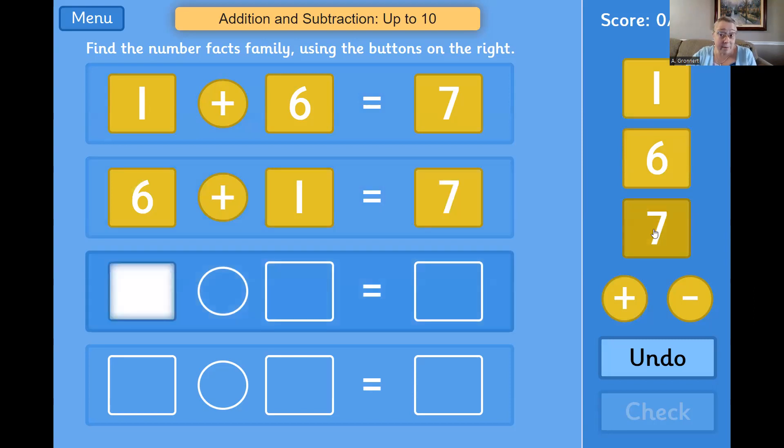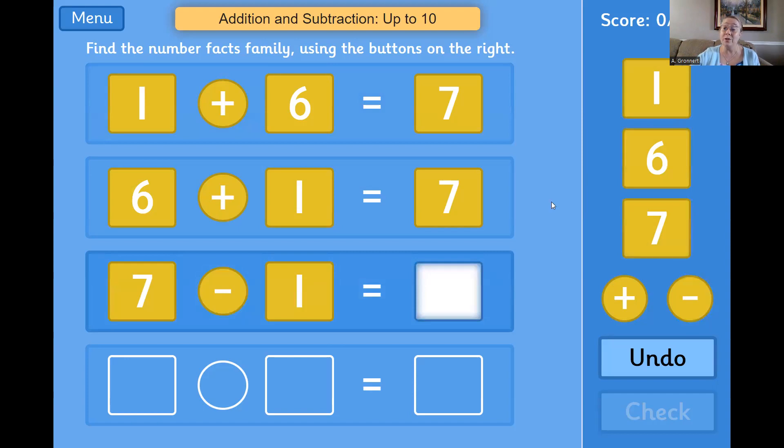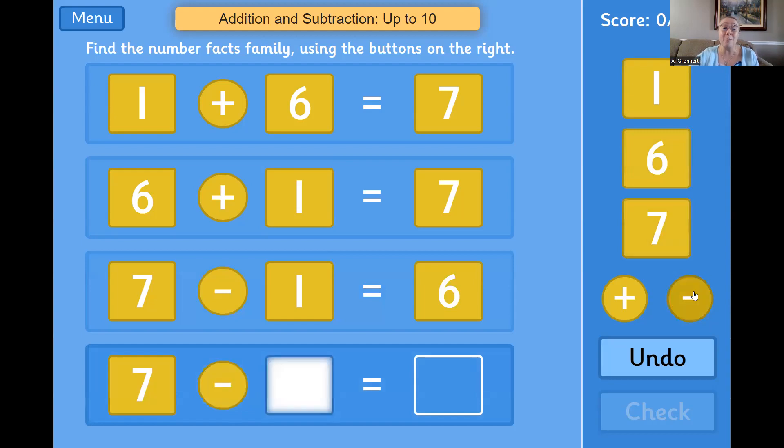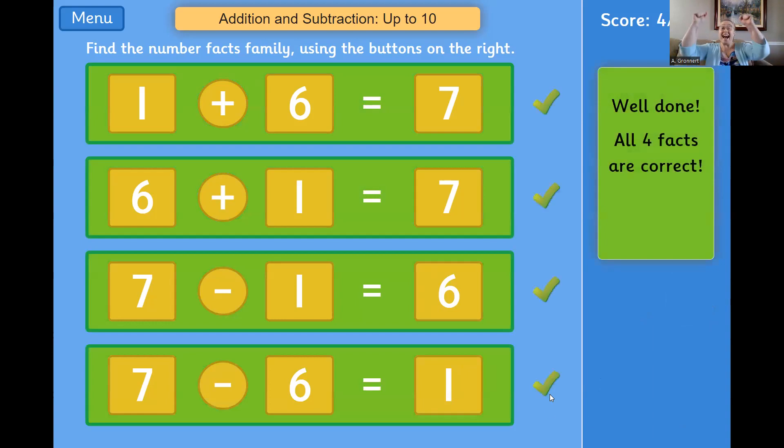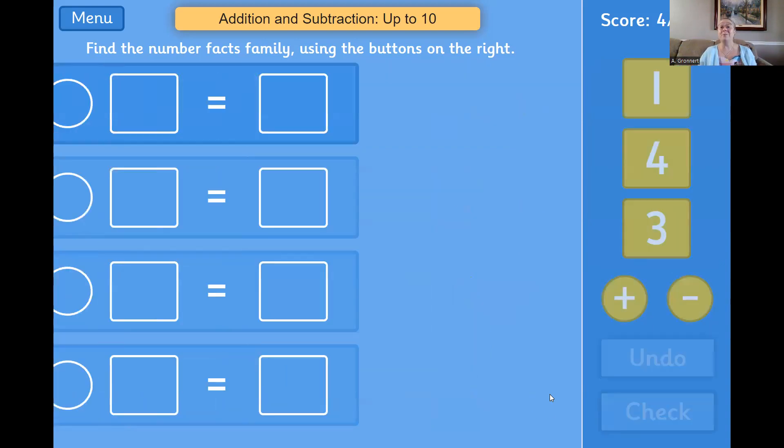Now I need to make my two related subtraction equations. And if you remember, when we create subtraction equations, we have to start with the whole or the bigger number. That's the 7. So let's say 7 take away 1 equals 6 and 7 take away... That's right. You got it. 6 equals 1. Yes, let's check and see if we got all of those right. Yes, we got all 4. That is really cool.